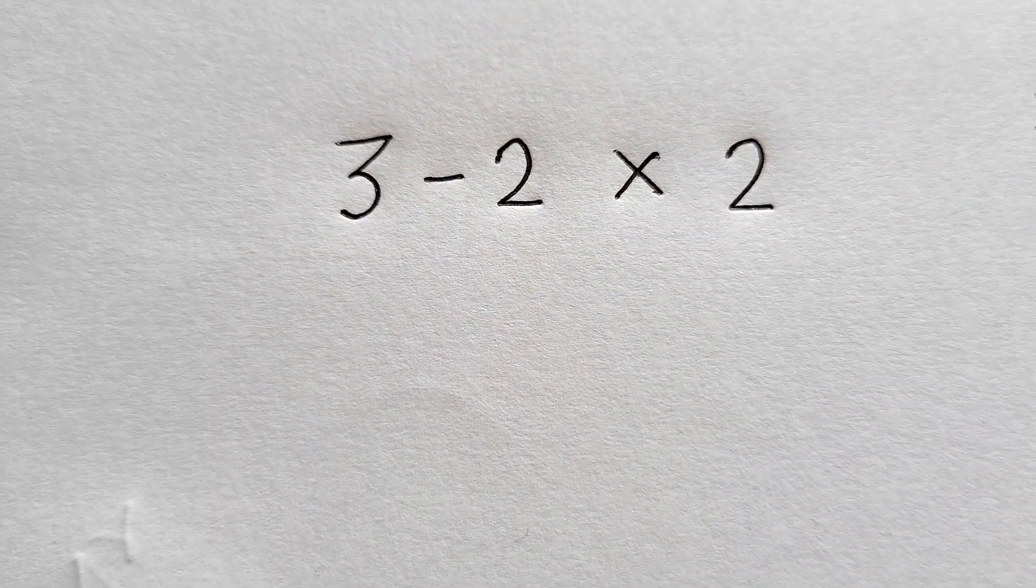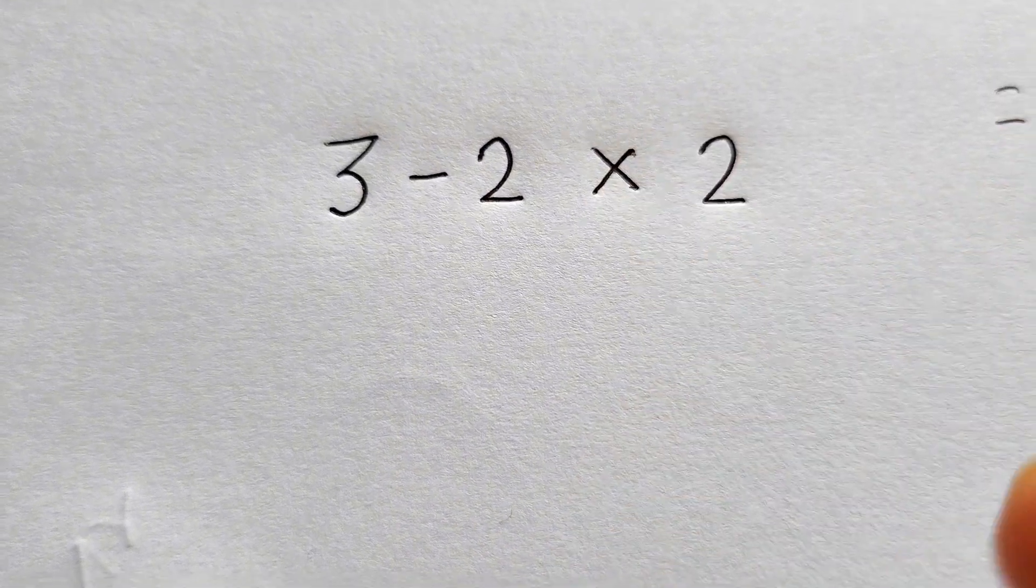So the expression is 3 minus 2 times 2. Now here most people will forget the rule, that is order of operations rule, that is also known as PEMDAS.